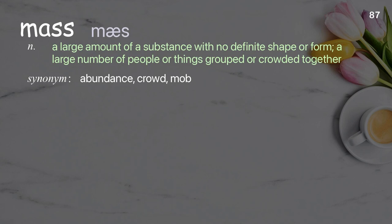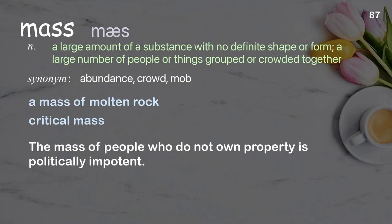Mass: a large amount of a substance with no definite shape or form; a large number of people or things grouped or crowded together. Examples: a mass of molten rock, critical mass. The mass of people who do not own property is politically impotent.